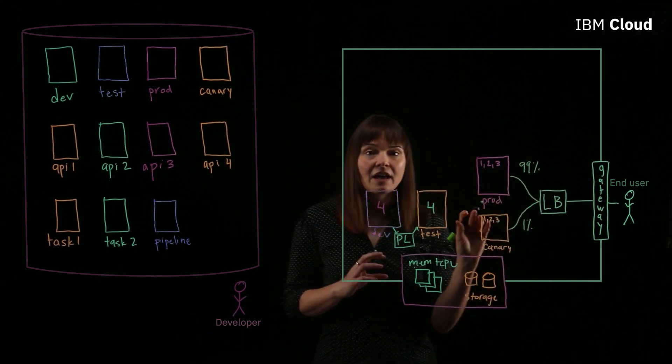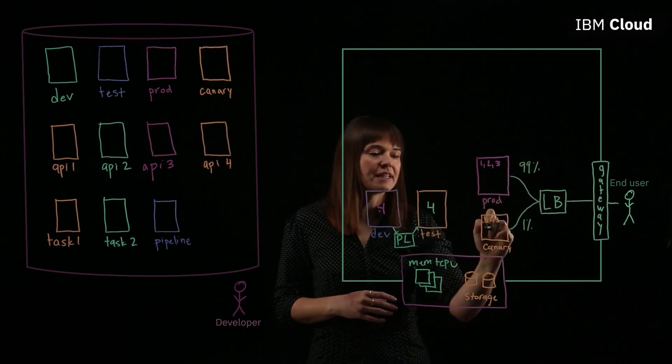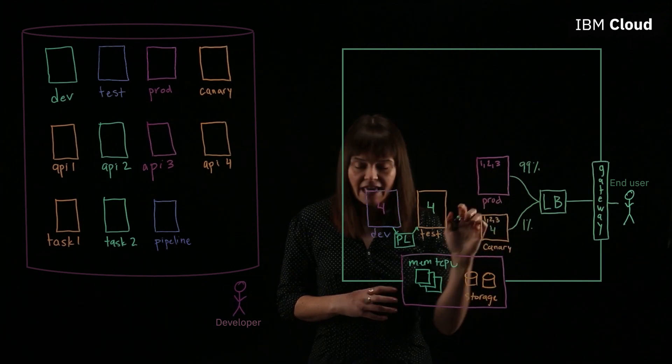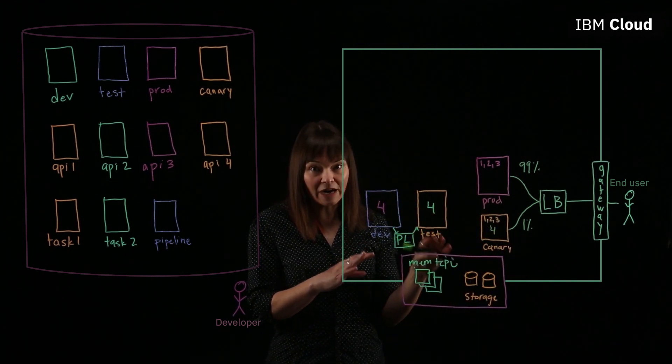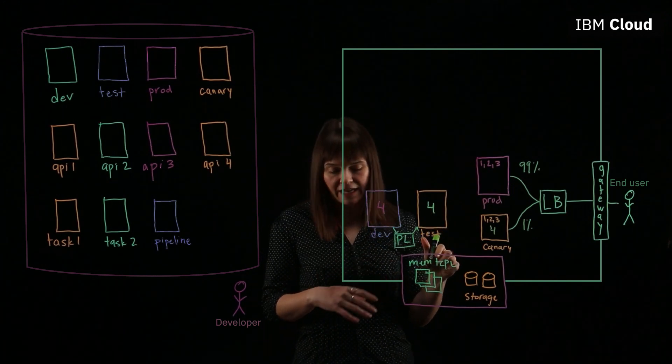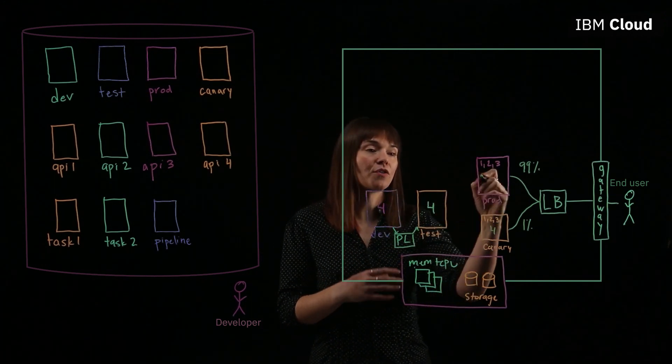So in this way, API 4, once it's in the canary environment, experiences some real-world web traffic to make sure it is ready before it's promoted all the way into production.